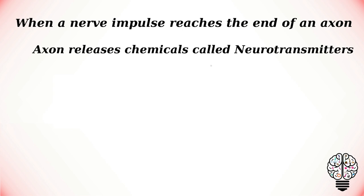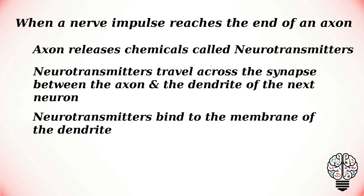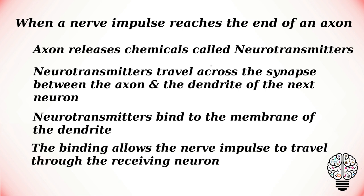The following steps describe what happens when a nerve impulse reaches the end of an axon. The axon releases chemicals called neurotransmitters. Neurotransmitters travel across the synapse between the axon and the dendrite of the next neuron. Neurotransmitters bind to the membrane of the dendrite, and this binding allows the nerve impulse to travel through the receiving neuron.